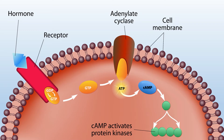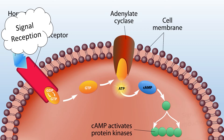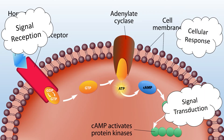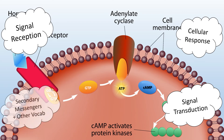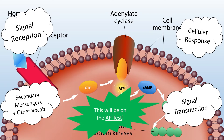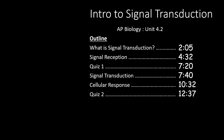In this video we're going to see how cells can receive a signal, pass the signal along using signal transduction, and ultimately create an appropriate cellular response. We'll cover all the important vocabulary and concepts related to signal transduction — this information will definitely be on the AP test. Come along with us as we take an introductory look at signal transduction pathways. In this video we cover section 4.2 of the AP Biology curriculum.